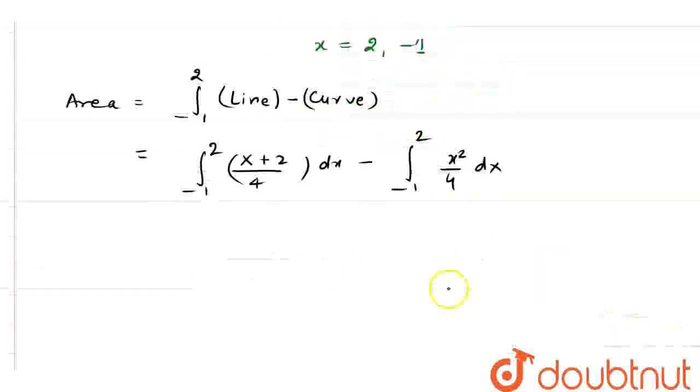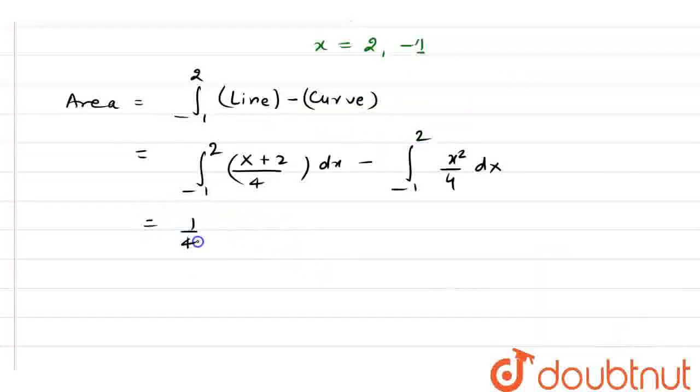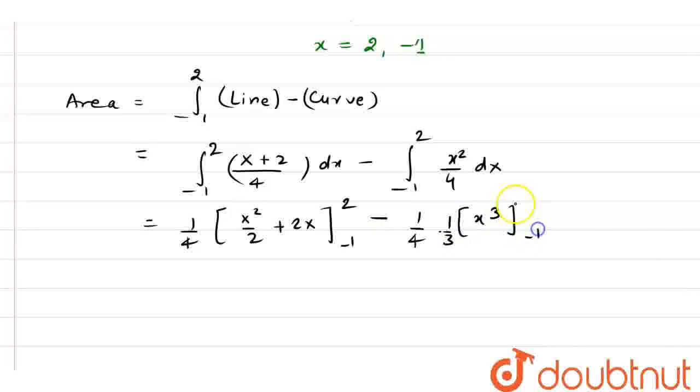Now, if you solve this, you will get 1 by 4 as common. And we have x square by 2 plus 2x. And we have limit minus 1 to 2. 1 by 4. And we have here x to the power 3 by 3 as limit minus 1 to 2.